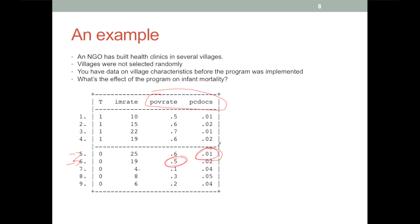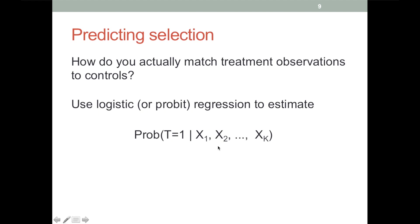In essence, that's how propensity score matching works. You look at the data to see which variables predict which villages got the treatment, and you pay more attention to the variables that are strong predictors. The way we do that is we estimate a logistic or probit regression using all of our observations. The dependent variable is 1 if the village got the treatment and 0 otherwise — that's our T variable — and our independent variables are all the background characteristics that might influence selection of the village as a treatment village. In our example, that's the poverty rate and the number of doctors per capita.